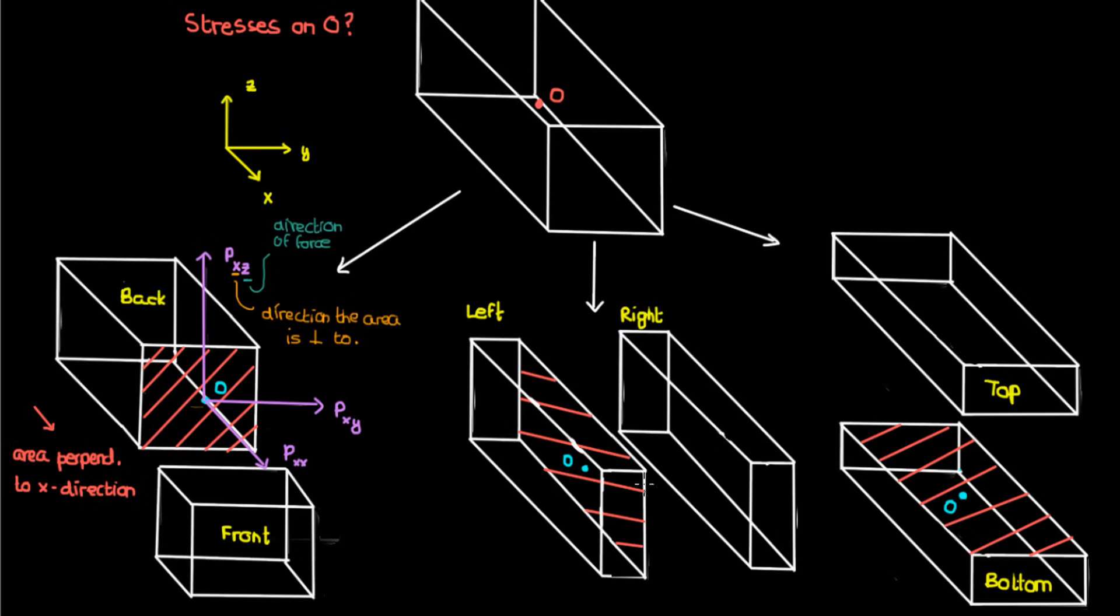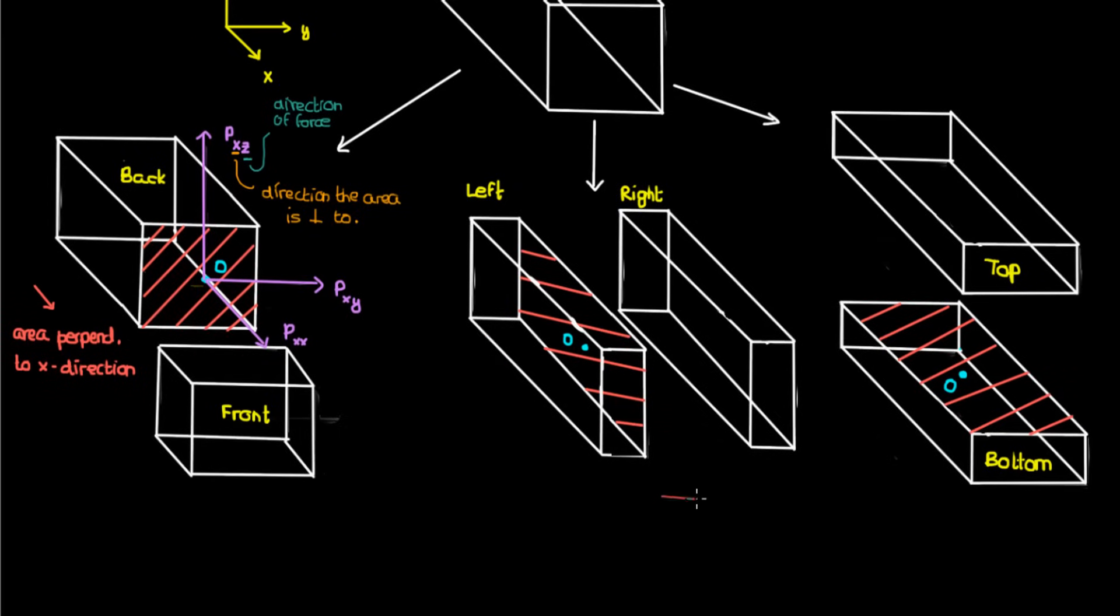The idea is similar for the second cross section. The second cross section is perpendicular to the y direction. Once again, we can say that the point O, which is on the left half of the beam now, generally experiences a force per unit area from the right half of the beam, which can be broken up into the components pyx, pyy, and pyz.